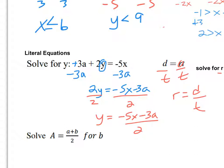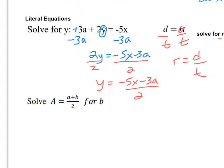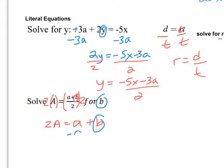The last one in this section has a fraction. The whole right side is a fraction, so I'll get rid of the denominator first by multiplying by what's in it. So I get 2A equals a plus b. Remind yourself we're solving for b, so I subtract a. I have 2A minus a equals b. Note that the capital and lowercase letters matter here — they represent two different things.